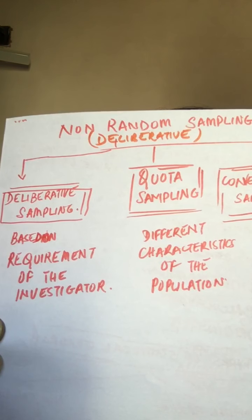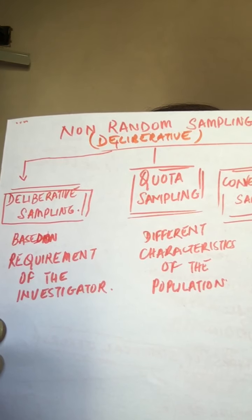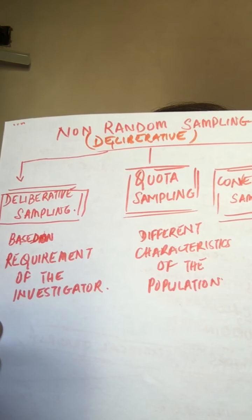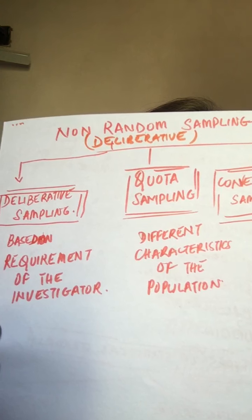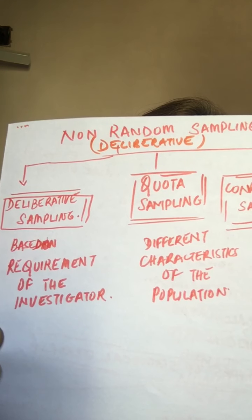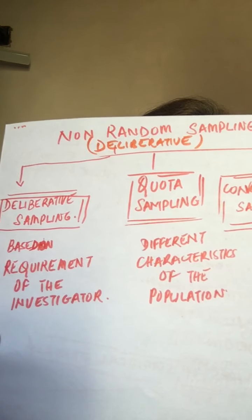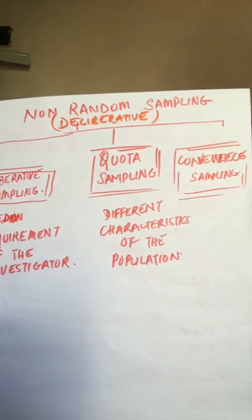One big demerit is that there's a great possibility of the results being affected by personal prejudice. Maybe the person is talking about a pen because he feels that's the best, so that could be personal bias or prejudice.